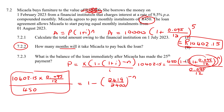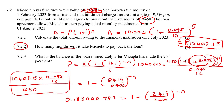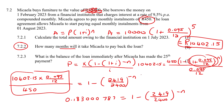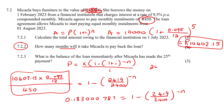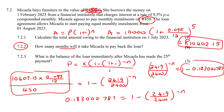Type this on your calculator — it'll also give you a fraction, or a decimal. Let's see what that gives us. So rearranging further, we end up with (2,419 over 2,400) to the negative N equals 0.816999213. Now we use logs.